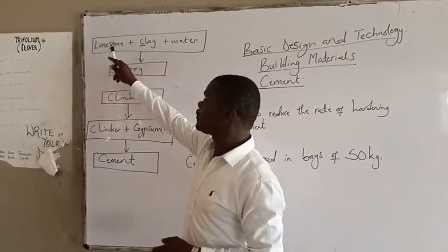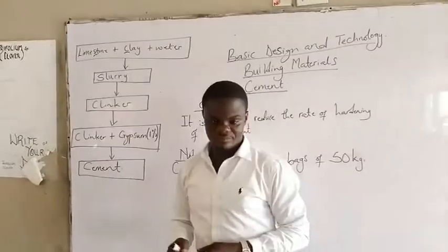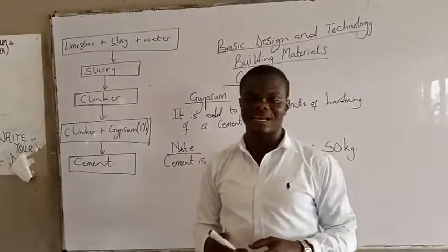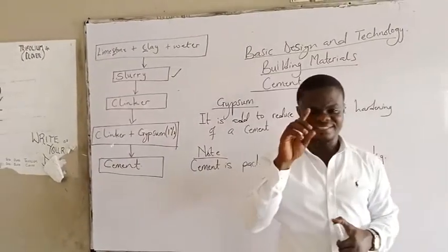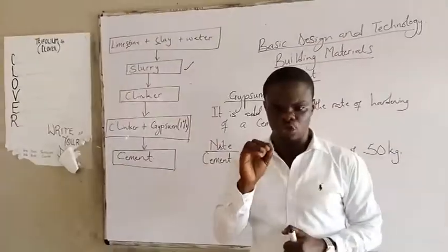So this limestone and clay is ground and mixed with water. When the limestone and clay is mixed with water, you will obtain a substance called slurry. The slurry is like a paste, very thick.